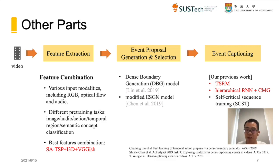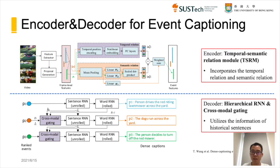Finally, we arrive at the best feature combination strategy: SA-TSP, I3D, and VGGish. We then use a dense boundary generation model and a modified ESGN model to generate and select event proposals. For event captioning, we use the TSRM and hierarchical RNN proposed in our previous work to generate high-quality captions. The temporal semantic relation module incorporates temporal and semantic relations via temporal position encoding and self-attention, and the refined features are fed into a hierarchical RNN including sentence-level and word-level features, with a cross-modal gate to adaptively merge the information.